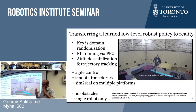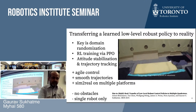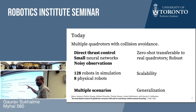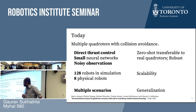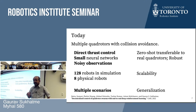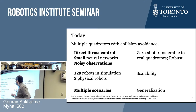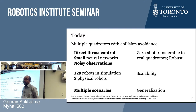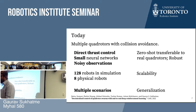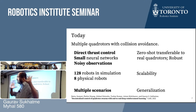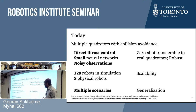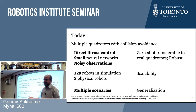Based on that single-robot work, we built a system for multiple quadrotors with collision avoidance — the subject of the rest of this talk, published at CoRL last year. Key properties: we do direct thrust control; learned networks must be small enough for a forward pass on the tiny vehicle at flight time; observations are noisy; we'll show simulation results with up to 128 robots, and physical results with up to eight robots, with some preliminary tests at 16.